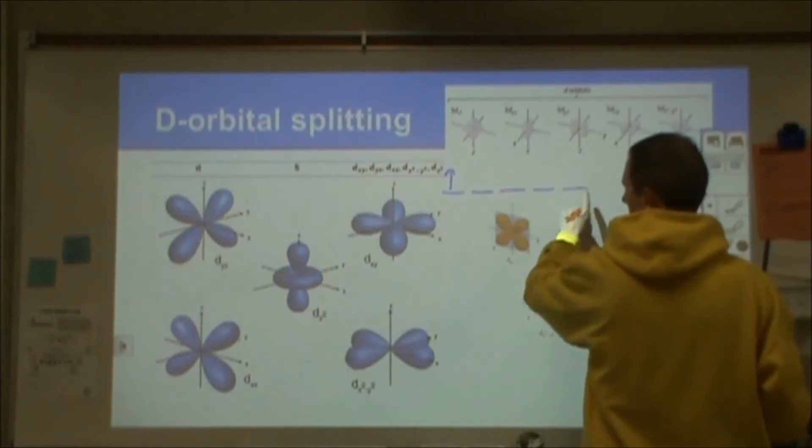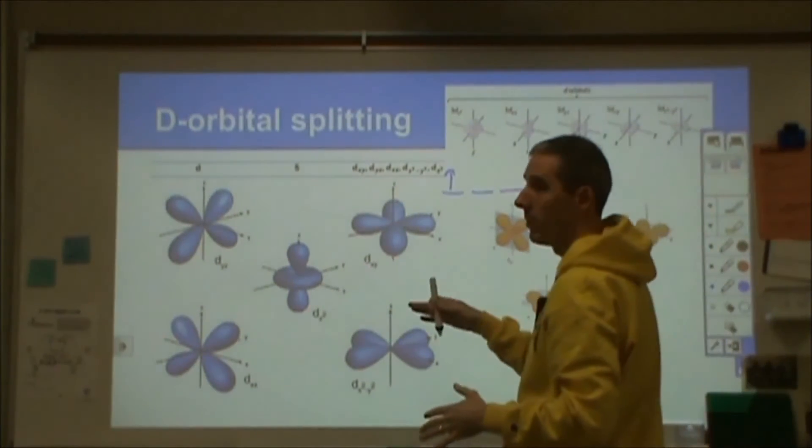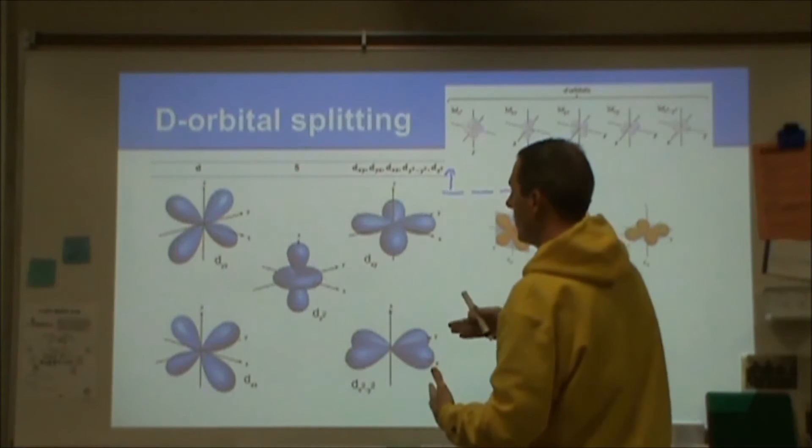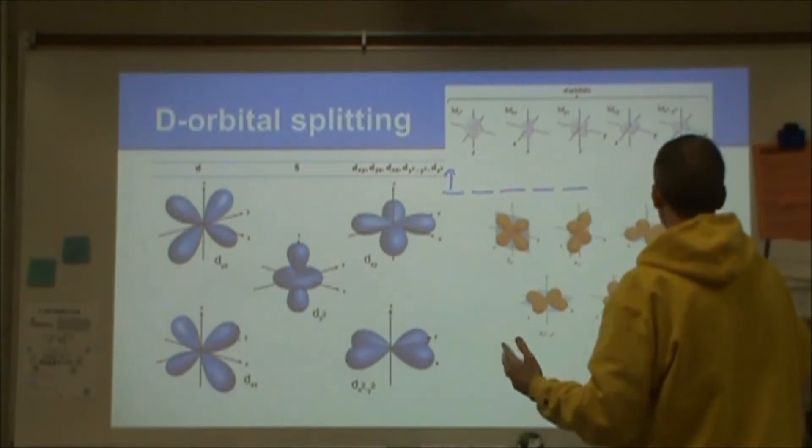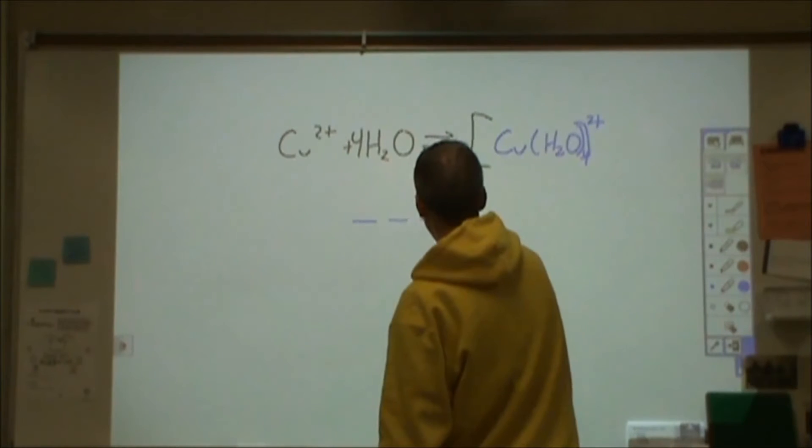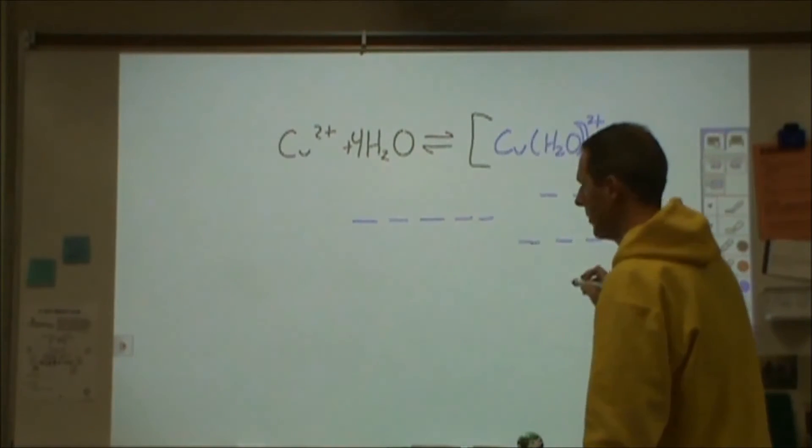Instead of having five orbitals that are all degenerate, that are all the same in energy, three of them are going to interact with things that are not along the axis, and two of them are going to interact with things that are along the axis more than the other ones. So they're going to split into two that are one energy and three that are another energy.